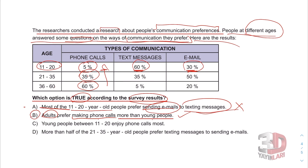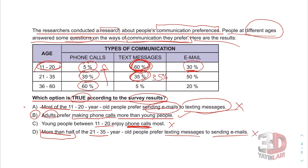Let's carry on. C: Young people between 11 and 20 enjoy phone calls the most — en çok. Let's see ages 11 and 20 — no, they enjoy texting messages the most. This is incorrect. D: More than half — yarısından fazla — of the 21-to-35-year-old people prefer texting messages to sending emails. Let's see — texting messages for that group is 35%, so that is less than half, not more than half — yarıdan az. This is not true. So the answer is B.